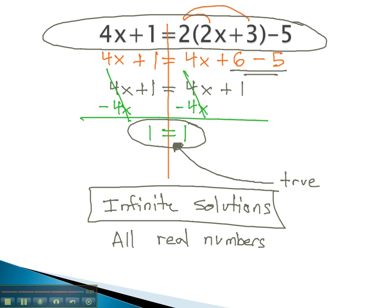So in conclusion, what we're seeing is if the variable subtracts out completely, when we move everything to one side, we will either have an infinite number of solutions, if we get a true equation, or no solution, if we have a false equation.